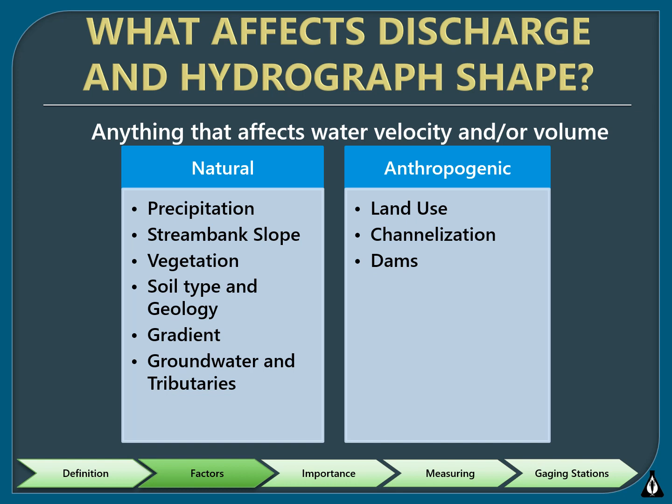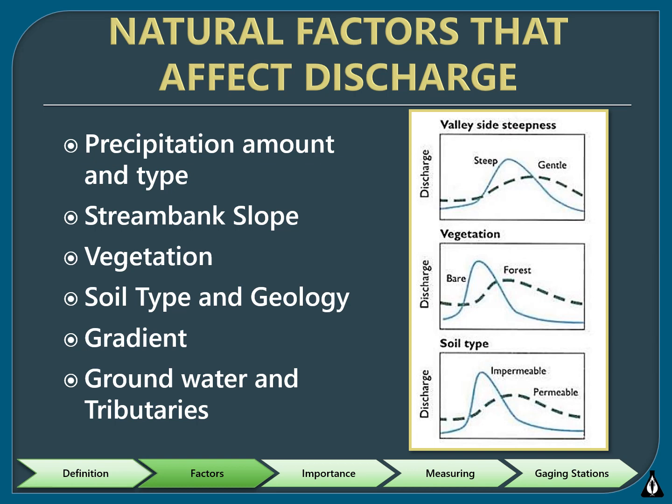Anthropogenic effects on stream discharge include land use, channelization, and dams. Let's take a look at how natural characteristics of a stream can affect stream discharge. In the image of the hydrographs, the dashed line represents natural conditions, while the blue line shows how a stream would change with development, like in an urban area. Stream discharge varies according to how much precipitation is received, over what length of time, and what type of precipitation is received, such as rain, ice, or snow.